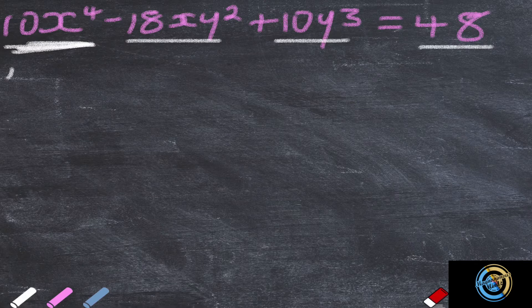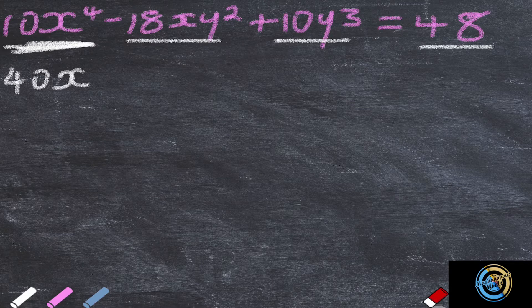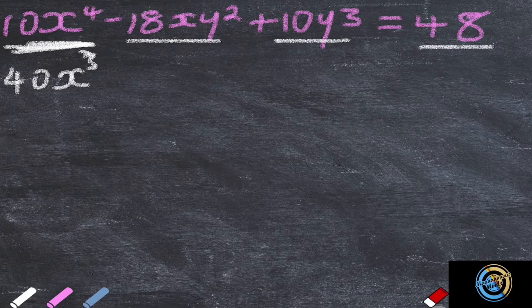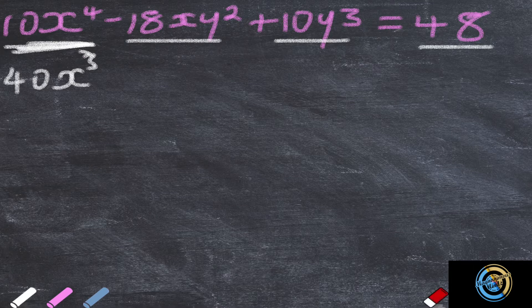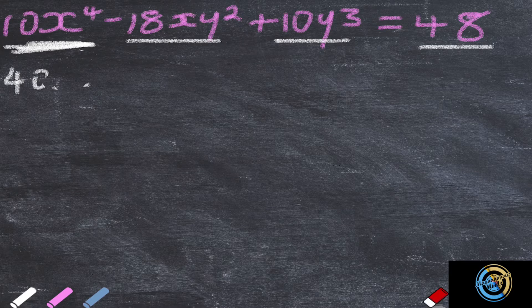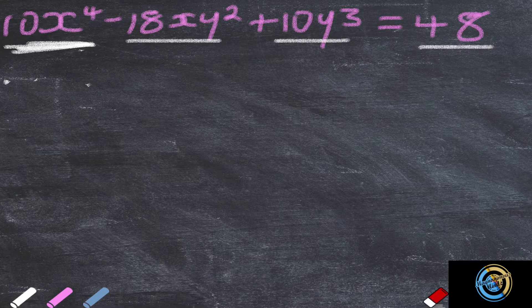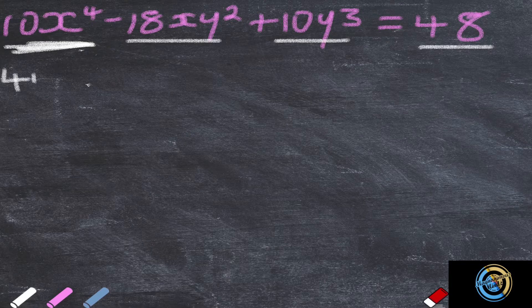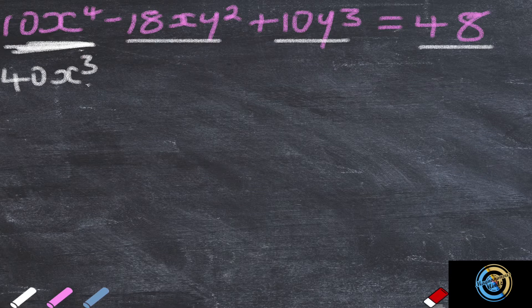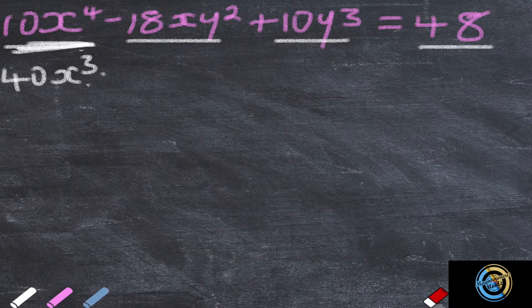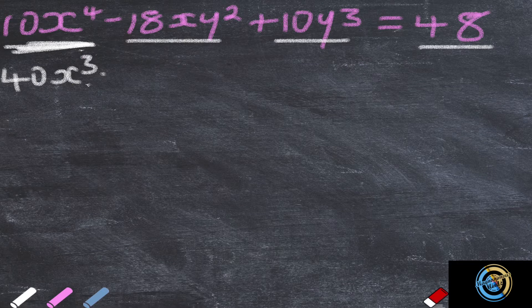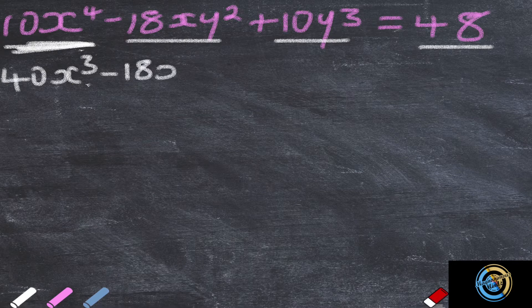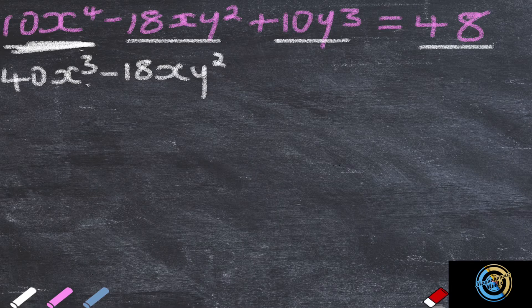Right here we're going to have 4 times 10, which is 40, x to the power 4 minus 1, which is 3. So we have 40x to the power 3, then you are going to have minus 18xy squared.